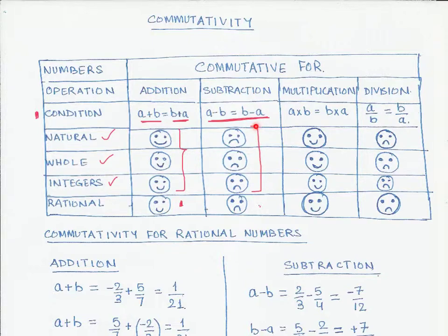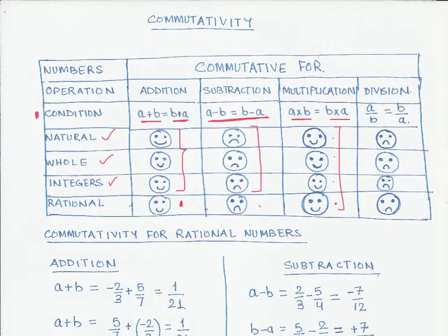Now let's look at multiplication. For multiplication, we multiply two numbers a times b and then multiply in the other order, b times a. We already found that natural numbers, whole numbers, and integers follow the commutative property for multiplication. Rational numbers also follow this property, so all four sets of numbers are commutative under multiplication — you can multiply in any order and get the same result.